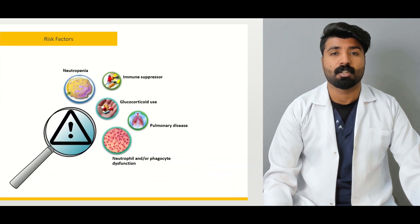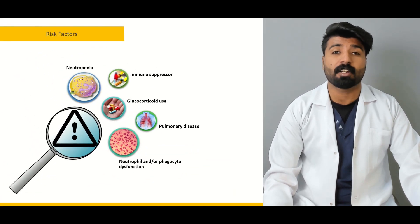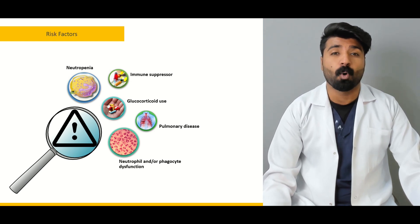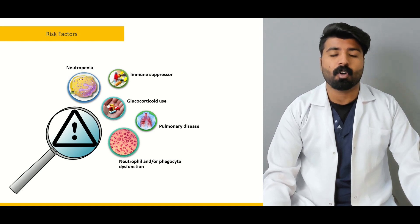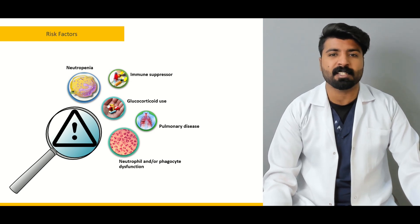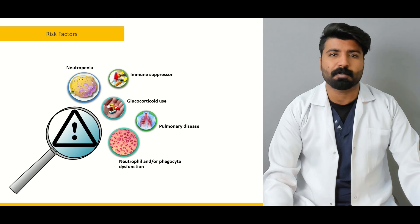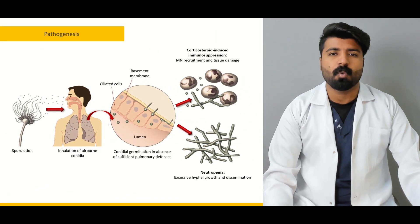We'll also cover how to approach prophylaxis. First, we'll start with the risk factors of aspergillosis — what conditions promote the development of this pathology. We're going to talk about how neutropenia, immunosuppression, glucocorticoids, pulmonary diseases, and neutrophil or phagocyte dysfunction lead to or promote this pathology.